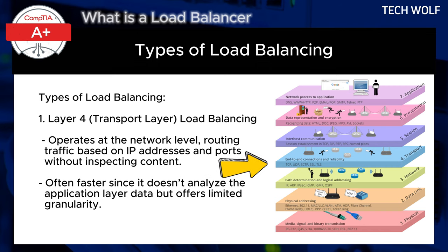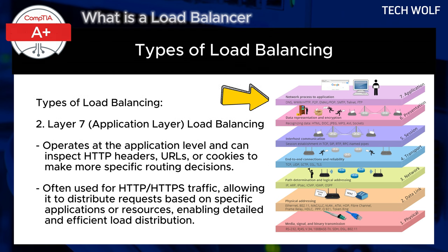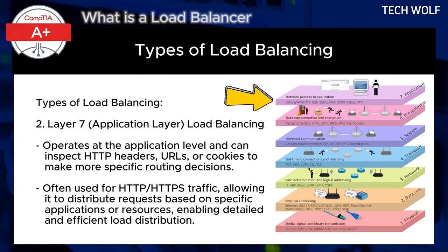There are also types of load balancing by OSI layer. Layer 4 load balancing operates at the network level, routing traffic based on IP addresses and ports without inspecting content. This is often faster since it doesn't analyze application layer data, but offers limited granularity. Layer 7 application layer load balancing operates at the application level and can inspect HTTP headers, URLs, or cookies to make more specific routing decisions. This is often used for HTTP and HTTPS traffic, allowing distribution of requests based on specific applications or resources, enabling detailed and efficient load distribution.